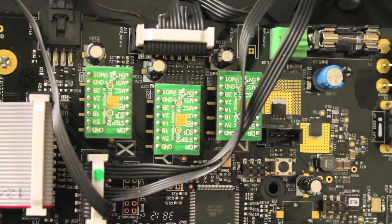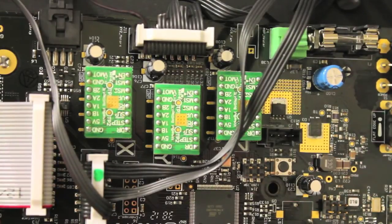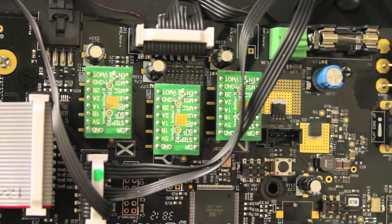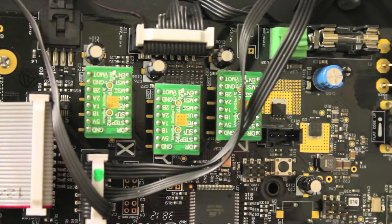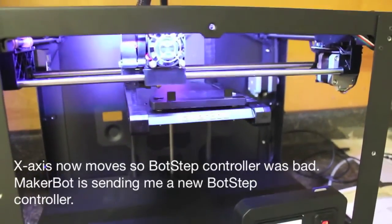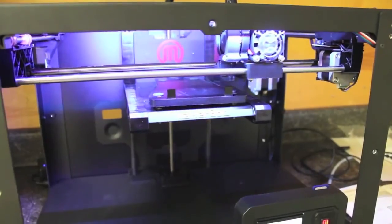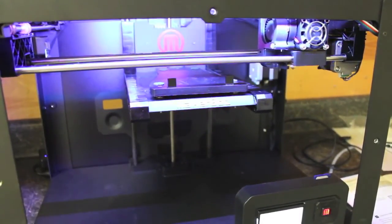I'm going to flip the MakerBot over and try to level the build platform and see if the X axis now moves. And look at that, we have movement on the X axis, so that would tell me that one of the bot step boards is bad.